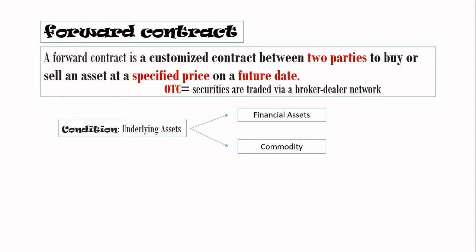In a forward contract, when we talk about long and short, we refer to buying and selling. If I say you are going to long the contract, that means you are going to purchase the contract. If I say you are going to short the contract, that means you are going to sell the contract.